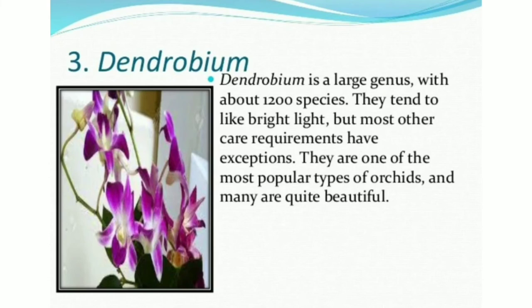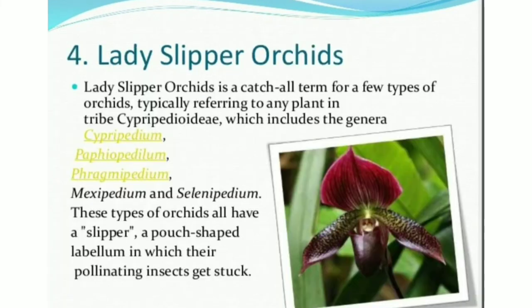Dendrobium is a large genus with about 1200 species. They tend to like bright light, but most other care requirements have exceptions. They are one of the most popular types of orchids and many are quite beautiful. Lady Slipper orchids is a catch-all term typically referring to any plant in tribe Cypripedioideae, which includes the genera Cypripedium, Paphiopedilum, Phragmipedium, Mexipedium, and Selenipedium. These orchids all have a slipper — a pouch-shaped labellum in which their pollinating insects get trapped.